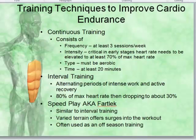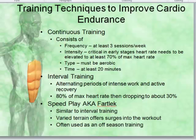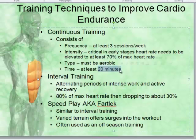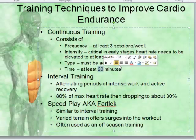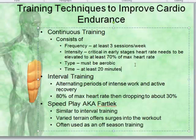For improving cardiovascular endurance or aerobic fitness, one method is continuous training. This requires at least three sessions per week. Intensity is critical in early stages — heart rate needs to be elevated to at least 70% of maximum heart rate using the Karvonen formula. It must be aerobic and at least 20 minutes in length. Current guidelines suggest 90 minutes of intense aerobic exercise per week or 120 minutes of moderate. At 70% for 20 minutes, that's moderate — you'd need about five sessions per week to hit 120 minutes.